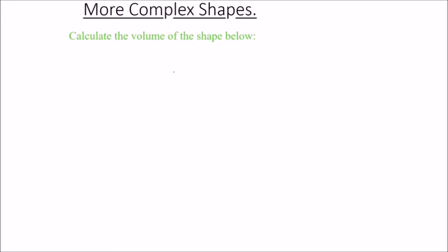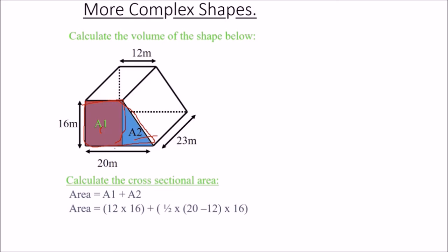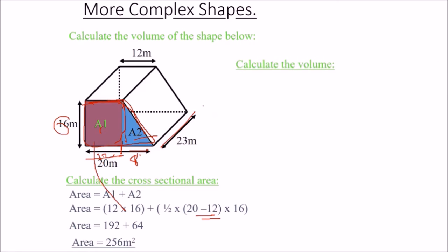For a more complex shape, we calculate the cross-sectional area first. It consists of a rectangle A1 (12 × 16) and a right-angle triangle A2 (½ × 8 × 16, where 8 = 20 − 12). Adding them gives 256 meter square as cross-sectional area. Multiplying by length 23, the volume is 256 × 23 = 5888 meter cube.